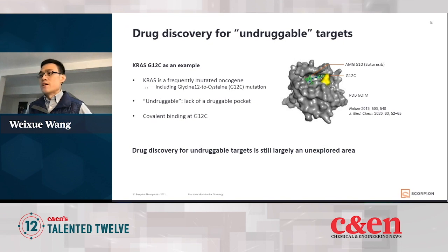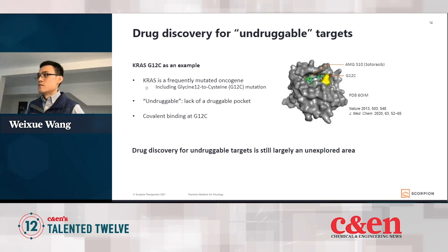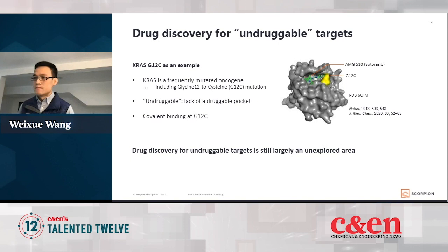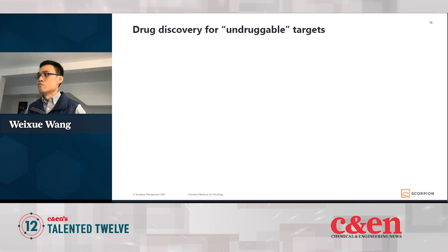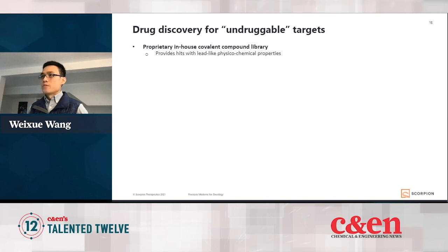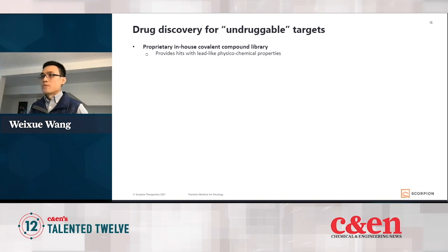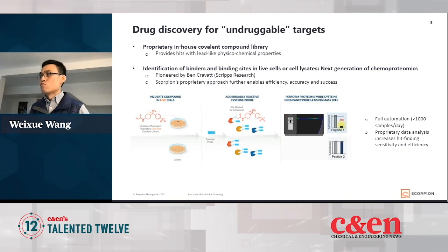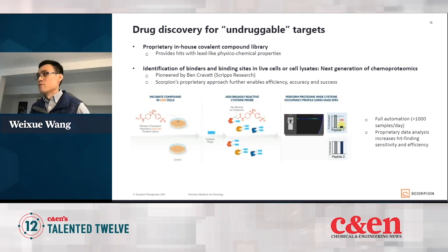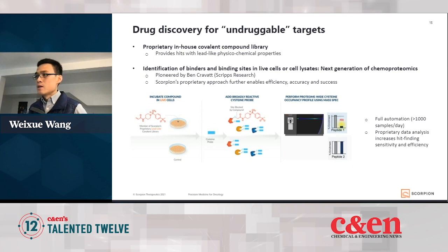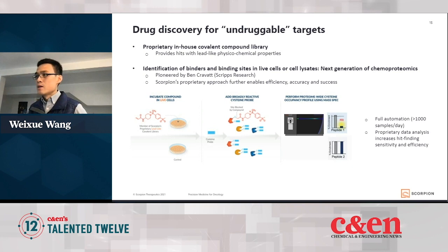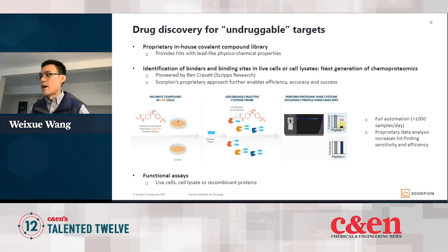There are still many challenges — how do you find ligandable cysteines, how do you find cryptic pockets, and how do you find functional hits? At Scorpion, we're trying to push this frontier in drug discovery. There are many important factors contributing to this, and here I show three of them. We have an in-house covalent compound library that can provide leads with desired chemical and physical properties. We also have a mass spec-based chemoproteomics platform so that we can screen our compounds in live cells or lysate — basically identifying which compound binds to which cysteine on which protein. The method was initially pioneered by Professor Ben Cravatt at Scripps, and at Scorpion Therapeutics we further improved the throughput and accuracy. Once we get a hit, we test them in functional assays to see if they have the desired pharmacodynamic effect.